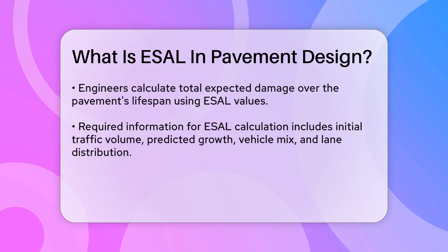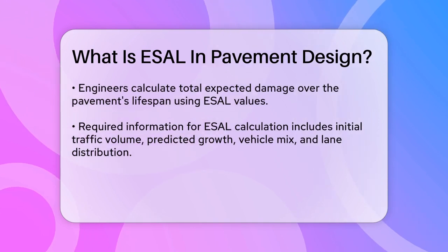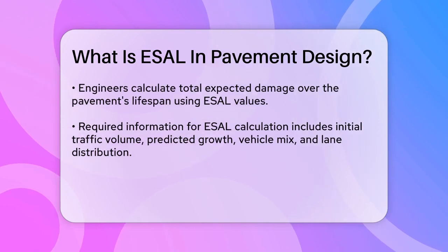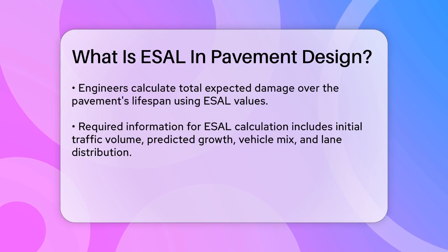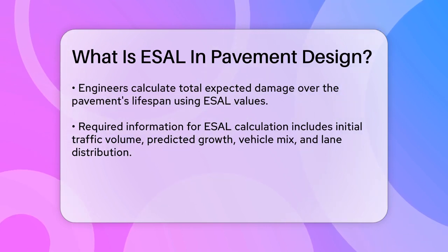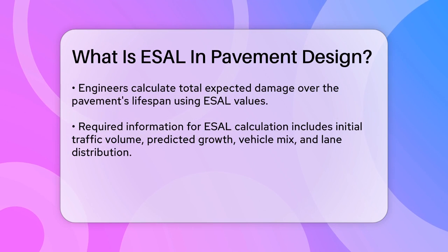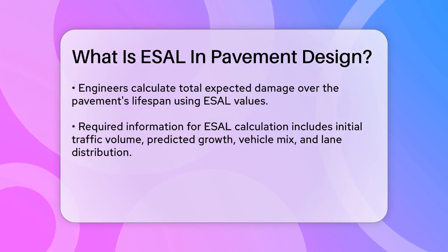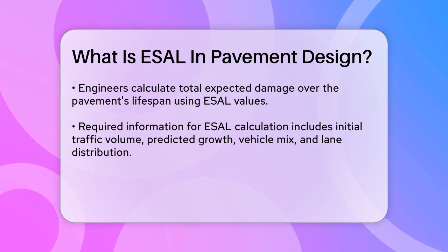To calculate ESALs, engineers need several pieces of information: the initial traffic volume, the predicted growth in traffic, the mix of different vehicle types, and the lane distribution.